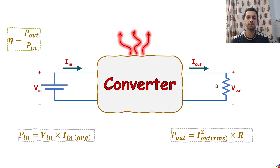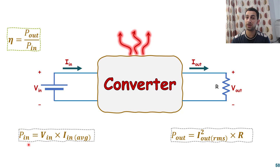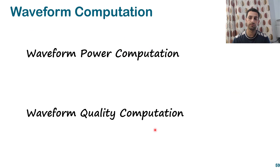As we finished last time, we ended with the slide that talks about converters. We have power input and power output to calculate the efficiency, and we need average values and RMS values. Today we are going to cover some examples about how we compute these things and also how we compute the average power for signals generally found in other circuits as well.